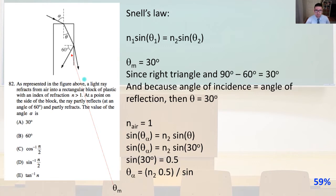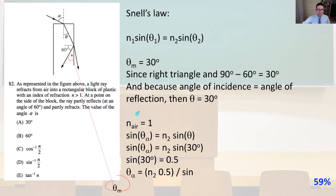From Snell's law, N1 sine theta 1 equals N2 sine theta 2. We call this angle theta m. Theta m equals 30 degrees since it's a right triangle: 90 degrees minus 60 degrees equals 30 degrees. Because the angle of incidence equals the angle of reflection, theta also equals 30 degrees.